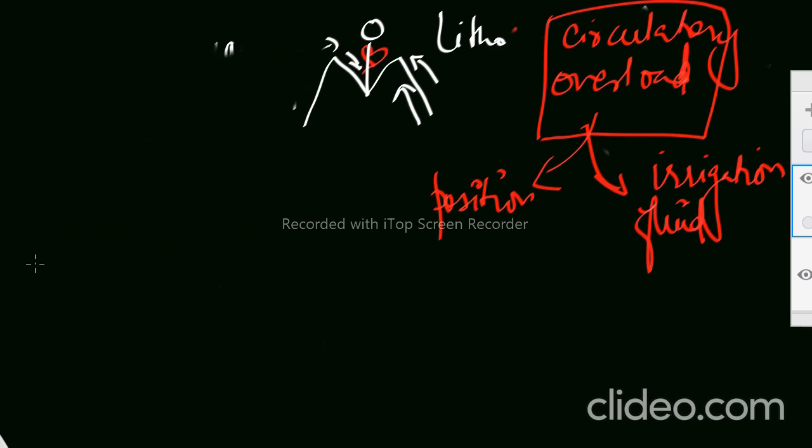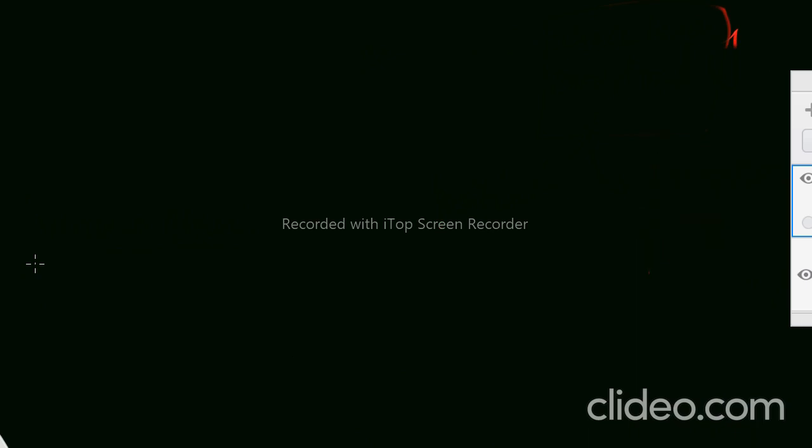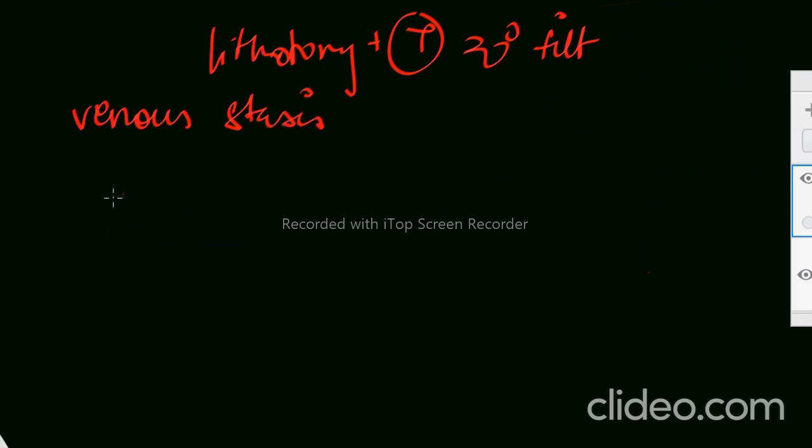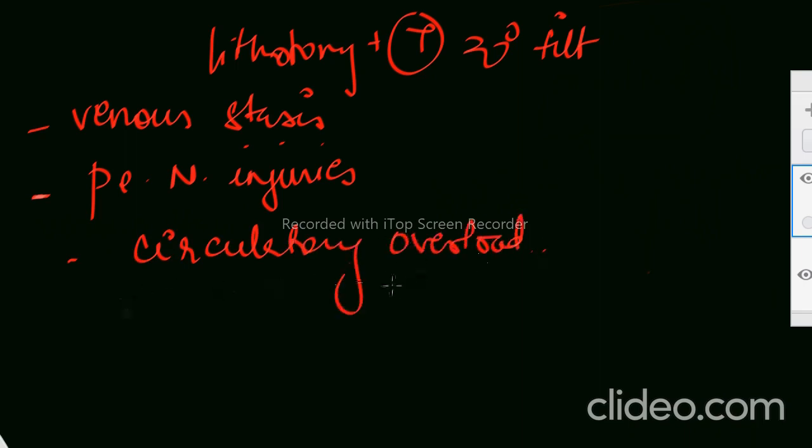So about the lithotomy, I will once again make you revise quickly what are the implications related to the lithotomy position. So lithotomy plus Trendelenburg around 20 degree tilt, it will cause venous stasis. First point. Second was peripheral nerve injuries. Circulatory overload. And we have to manage all these intraoperative things.